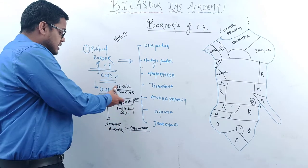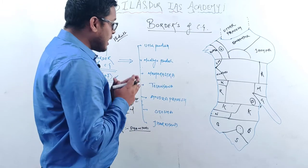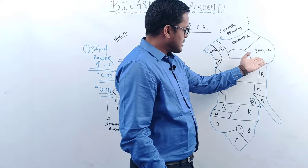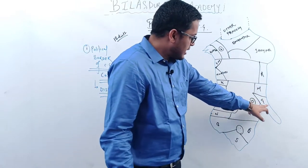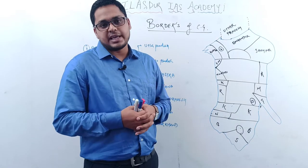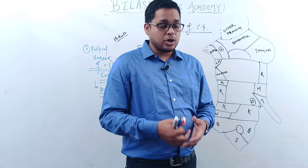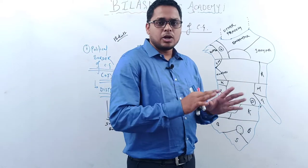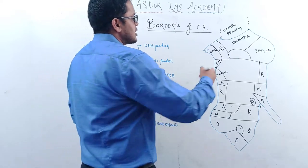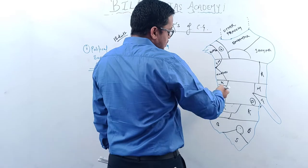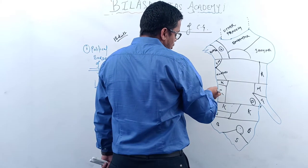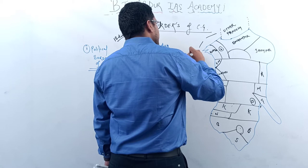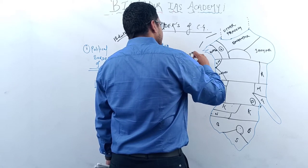Now talking about the state-wise borders: Uttar Pradesh makes the northern border. Below Uttar Pradesh going westward through Kabir Dham and Rajnandgaon — this is the Madhya Pradesh border. So Madhya Pradesh makes the border along this section.